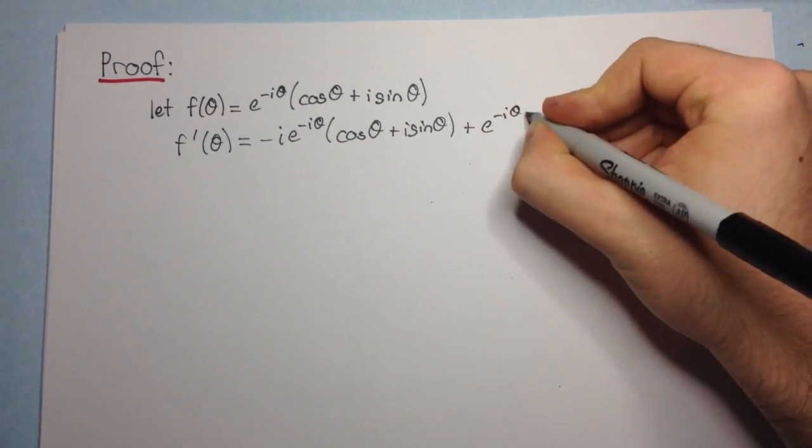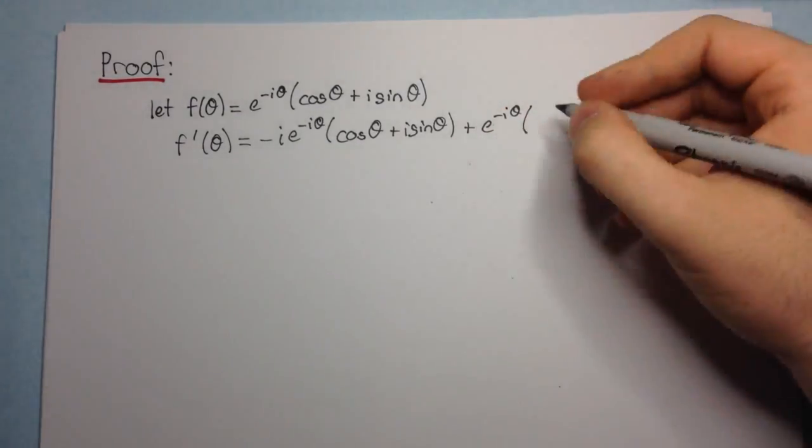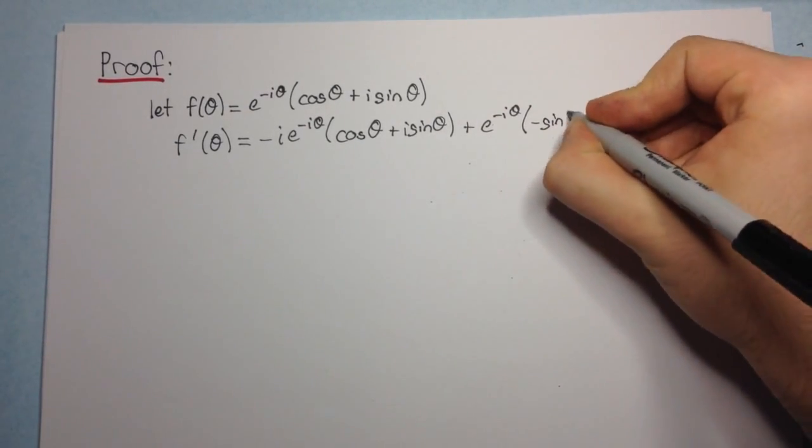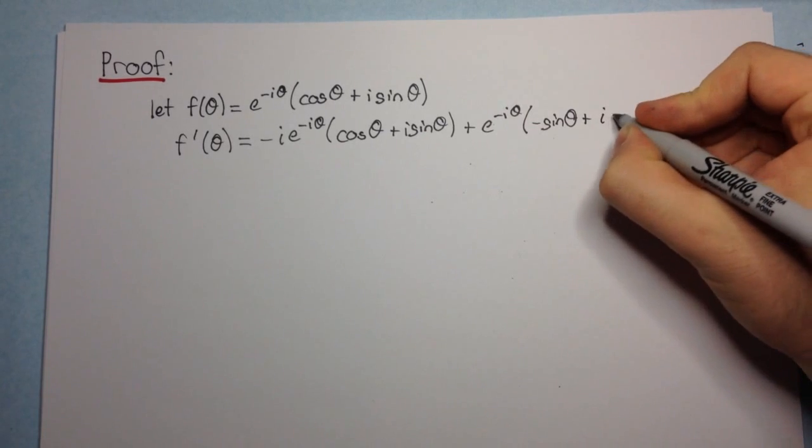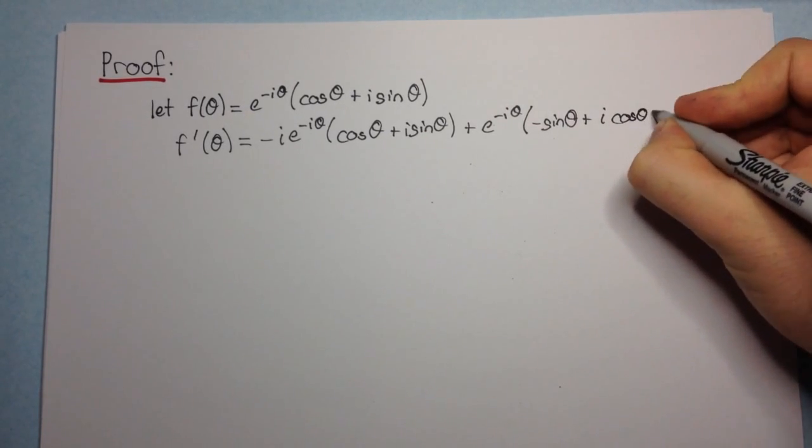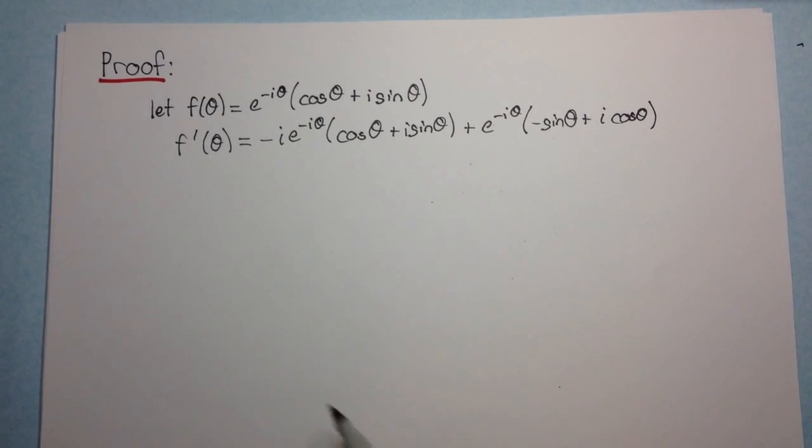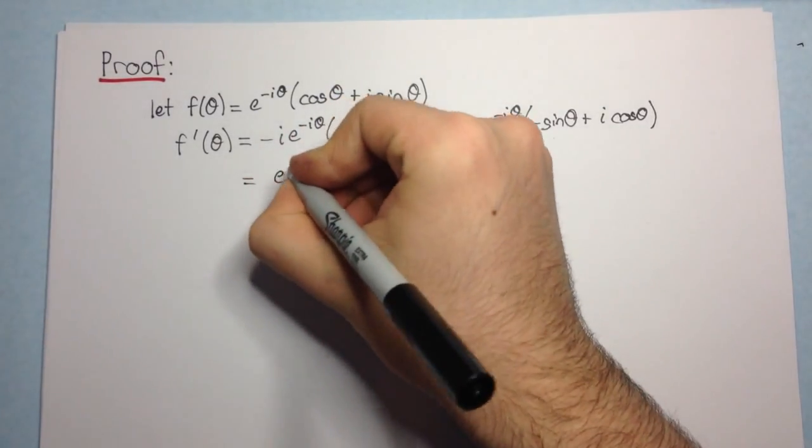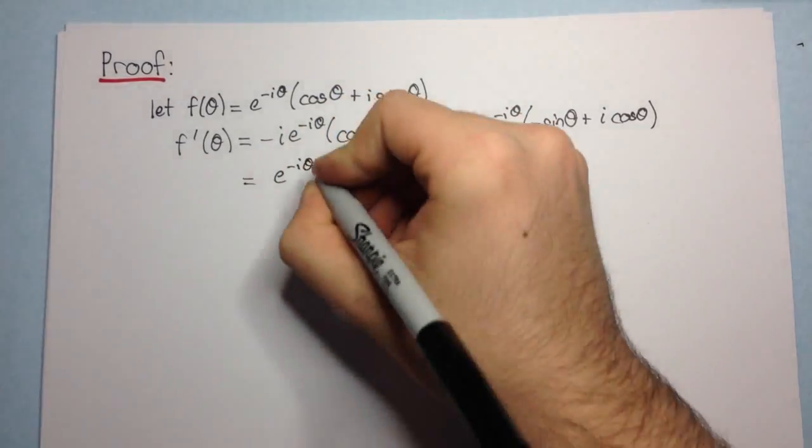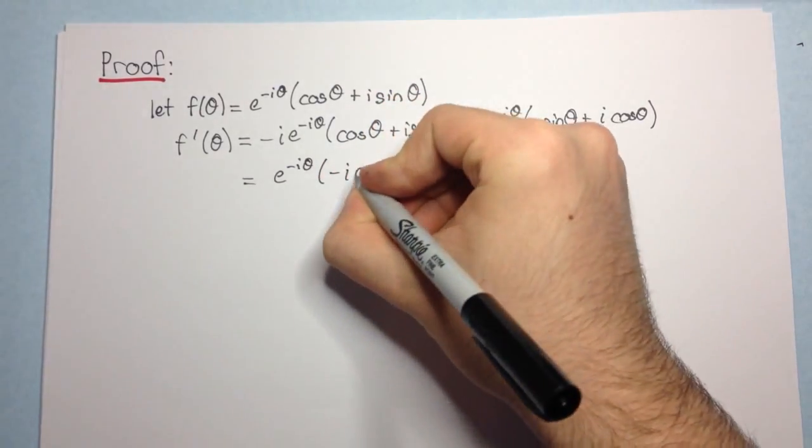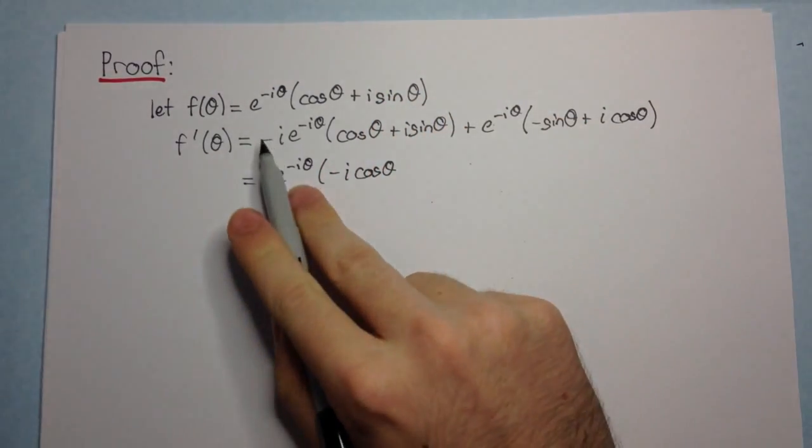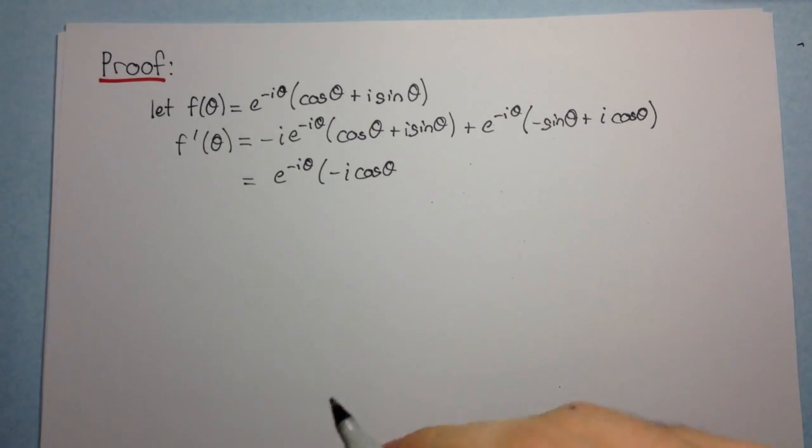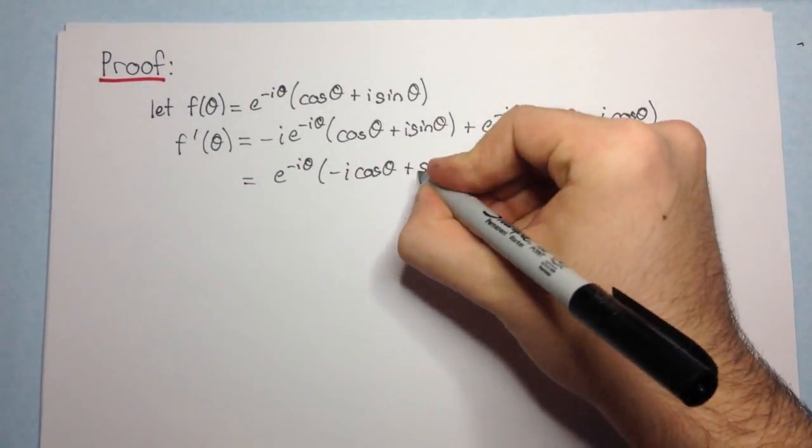So, the derivative of the second part. And remember, i here is just a constant. So when we differentiate cos theta, we get minus sin theta. And we get i cos theta. Now we can distribute this minus i through this brackets here. And we get e to the negative i theta, negative i cos theta. Now, we'll get minus i squared sin theta. And minus i squared is just a plus. So we get plus sin theta.